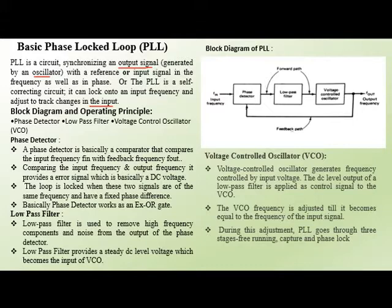Next we discuss the block diagram and operating principle. In the block diagram, there is the input frequency, and the first block is the phase detector. The output of the phase detector is connected to the low pass filter, and the low pass filter output is connected to the voltage control oscillator. The VCO produces the output frequency, and there is a feedback path connected back to the phase detector.